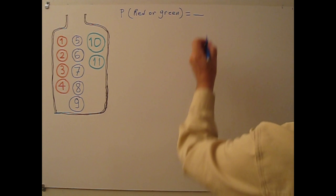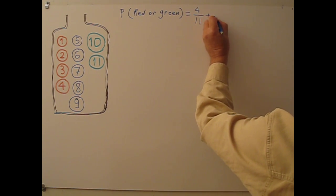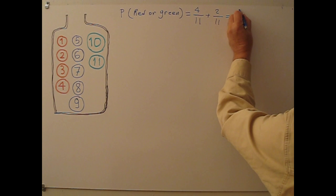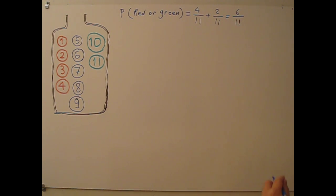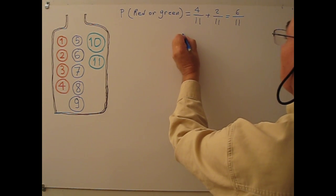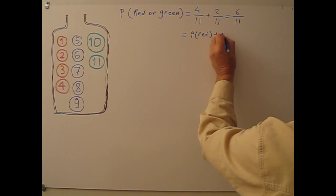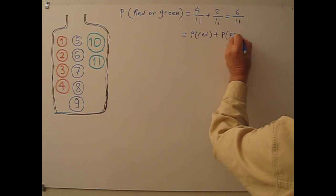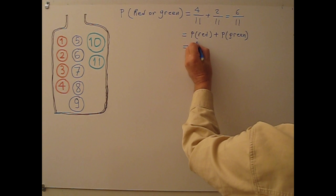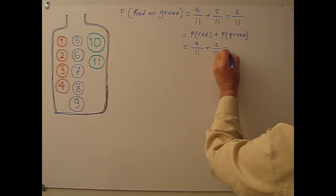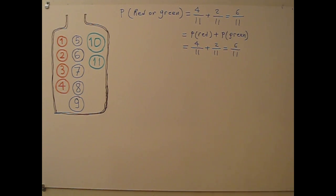How many red balls? We have 4, out of a total of 11. Green balls: 2, out of 11. If I add these, I get 6 over 11. Another way: P(red) plus P(green) equals 4/11 plus 2/11 equals 6/11. So the probability of drawing either a red or green ball is 6 over 11.